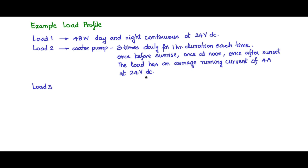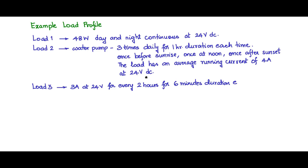Load 3 is a 3-amp load at 24 volts DC. For every two hours, it is switched on for a period of six minutes only. So it is switched on for six minutes at regular intervals of two hours throughout the entire day.